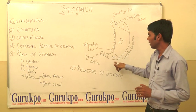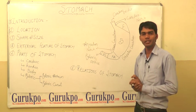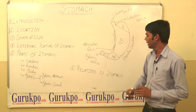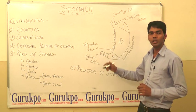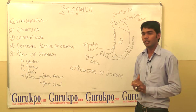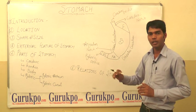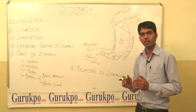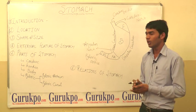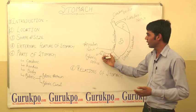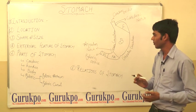The pyloric antrum part is the wide part that is 7.5 cm long, situated between the body and the pyloric canal part. The pyloric canal part is the narrow part that is 2.5 cm long, and it continues into the duodenum part of the small intestine.